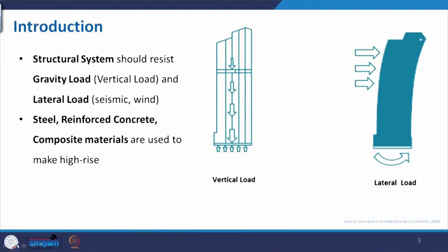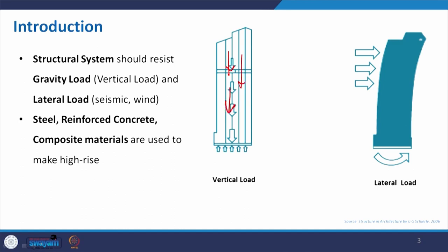As an introduction, we discussed in the previous lecture that mainly two kinds of loads are acting on a building. Type one is your vertical load, or the gravity load. Here you can see that all the dead load of the building acts axially, being transferred to the foundation, which provides a reaction. This is very common for all buildings, even for a one-storey building.